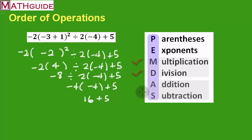Next step, I do addition and subtraction left to right. Well, there's only adding, so I'm going to add and I'm going to get 21.